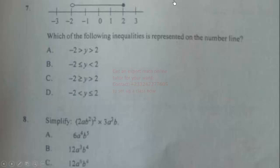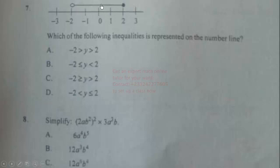Question 7: Which of the following inequalities is represented on the number line? The hollow (open) circle means we use a strict inequality without an equals sign. All numbers in the interval are greater than −2. The closed (shaded) circle at 2 means less than or equal to 2. Therefore: y > −2 and y ≤ 2. The correct answer is option D.